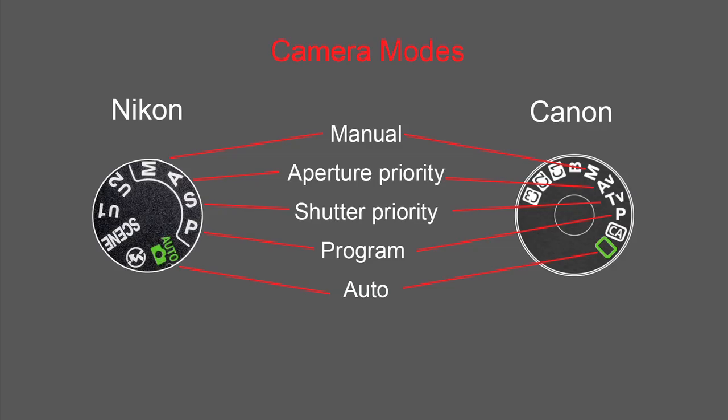In most entry-level DSLR cameras, you will find these 5 modes, which are Manual, Aperture Priority mode, Shutter Speed Priority, Program, and Auto mode. As you can see, they might be assigned with different symbols in different cameras. Here is an example of a Nikon and Canon camera. Let's talk about them in more detail.